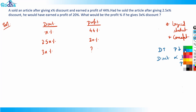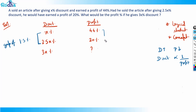We can solve this very logically. We can see that from x to 2.5x, there's a gap of 1.5x in the discount. So a gap of 1.5x in discount creates a gap of 24 percent in profit — from 44 percent down to 20 percent.